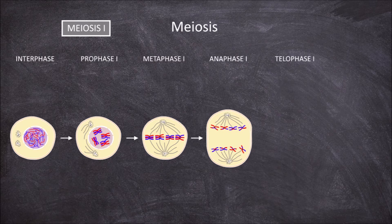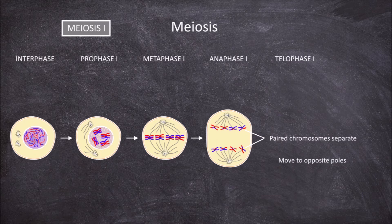The third phase of meiosis 1 is anaphase 1. During anaphase 1, the spindle fibers continue to contract and cause one chromosome from each pair to move towards the opposite poles of the cell. It is important to note that the sister chromatids stay attached to their centromeres and move together.